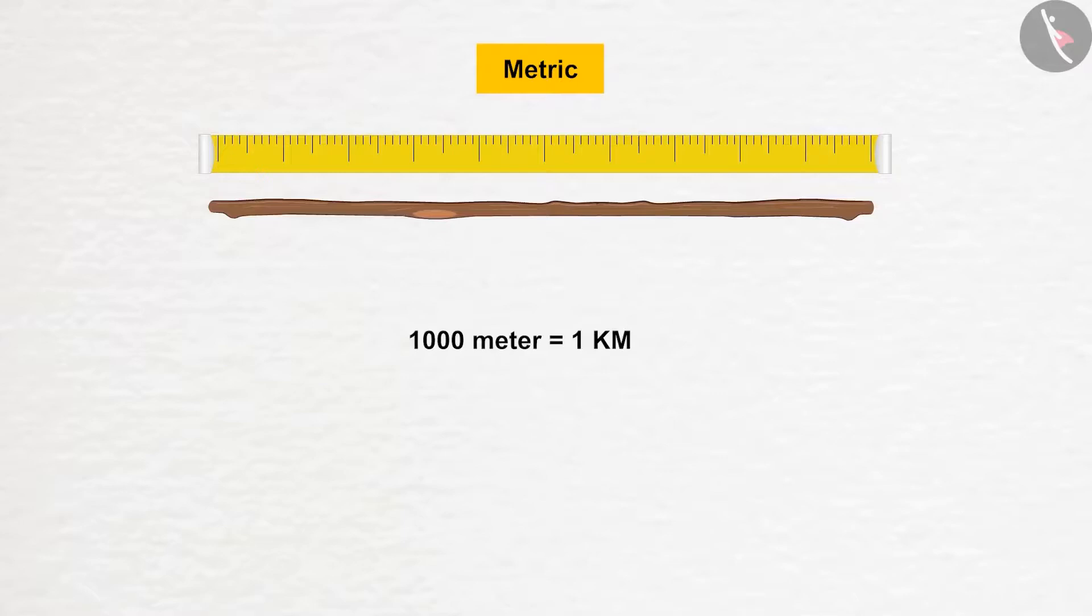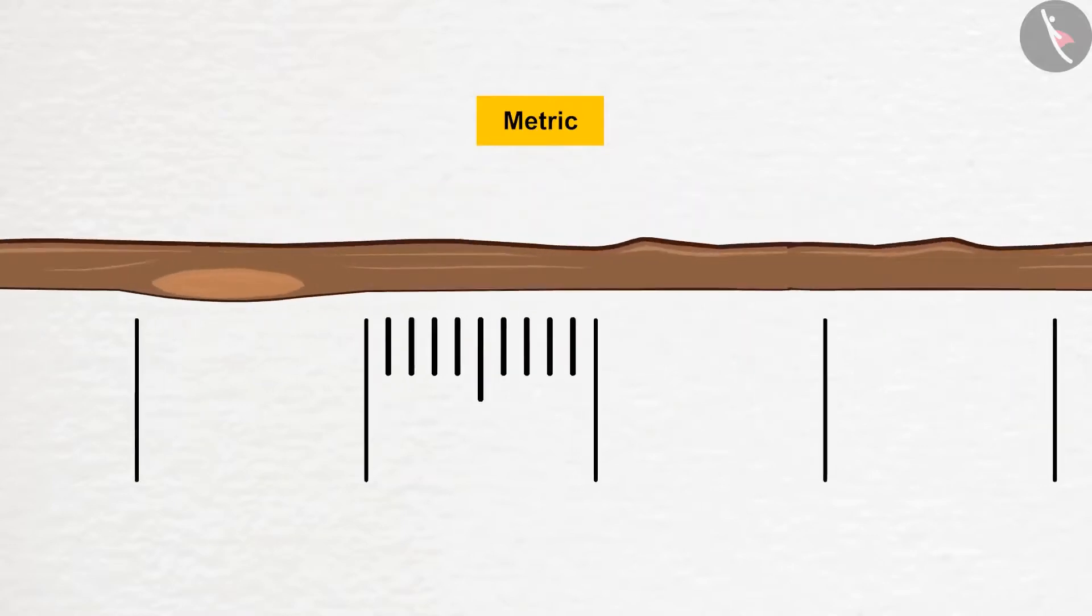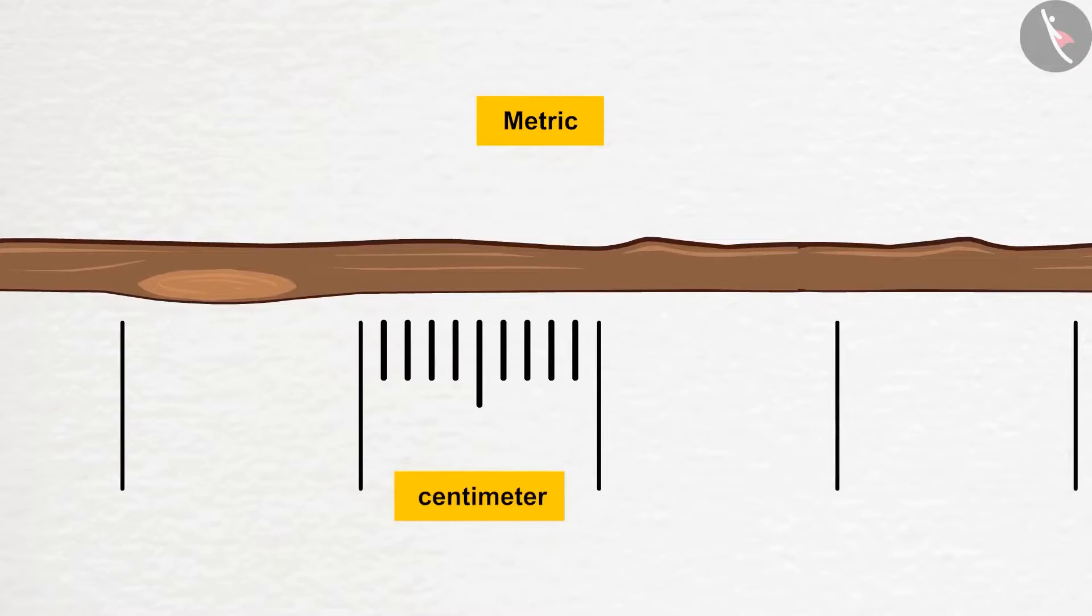For that, if you mark ten equal sized marks on the meter stick and then divide the tenth part again in ten parts, now each section is equal to a centimeter, which is used to measure smaller distances.